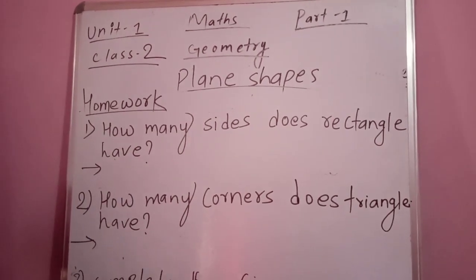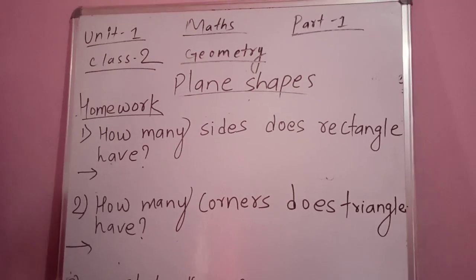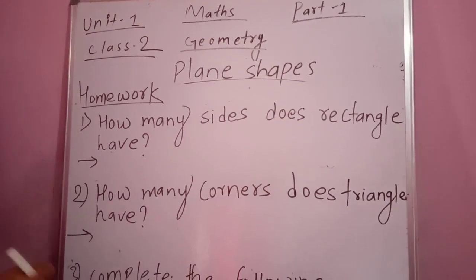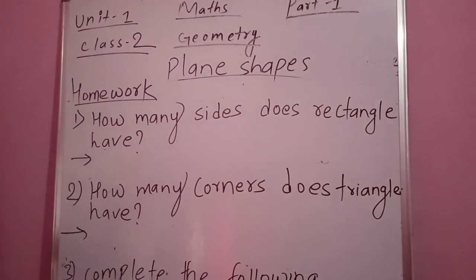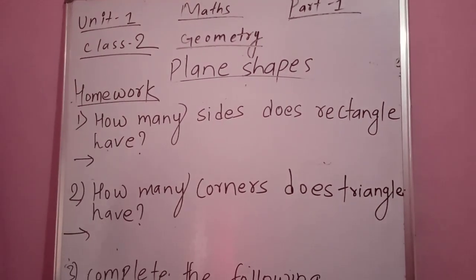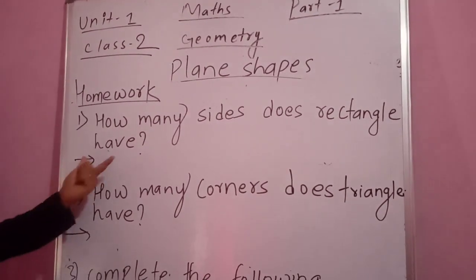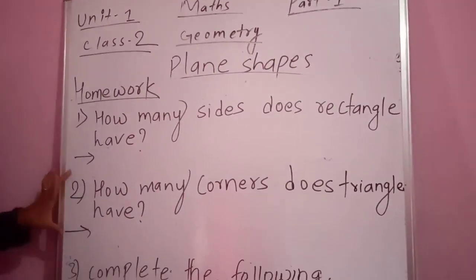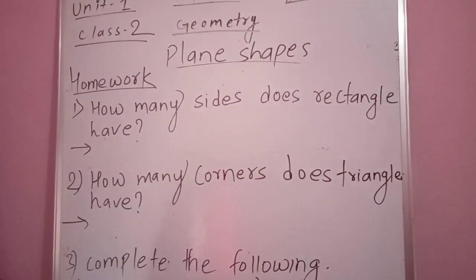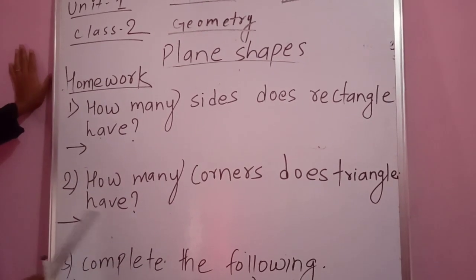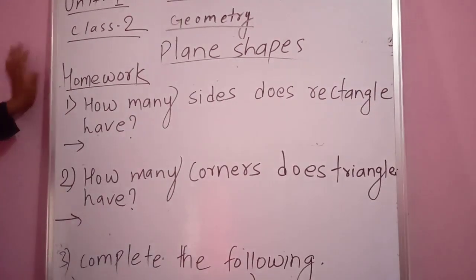This is the homework for you related to this geometry chapter. The first question is: how many sides does a rectangle have? The second question is: how many corners does a triangle have? As I explained before, you have to write your answer. The answer to the first question is: rectangle has four sides. For the second question, triangle has three corners — as I taught you that the triangle has three corners and three sides.